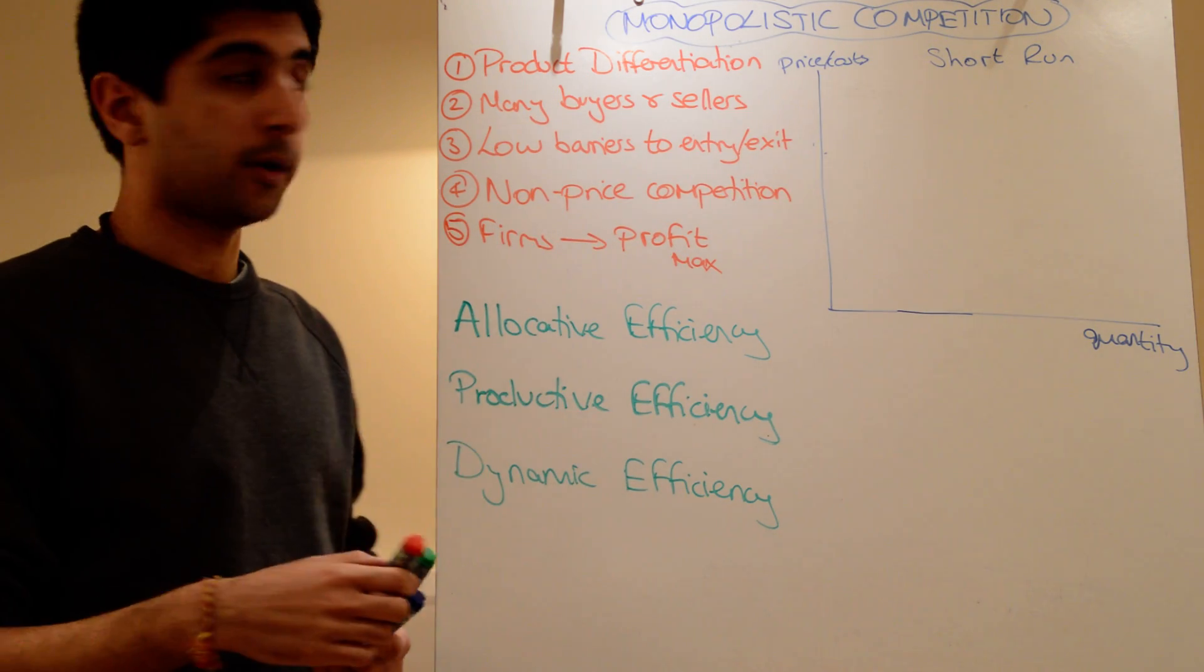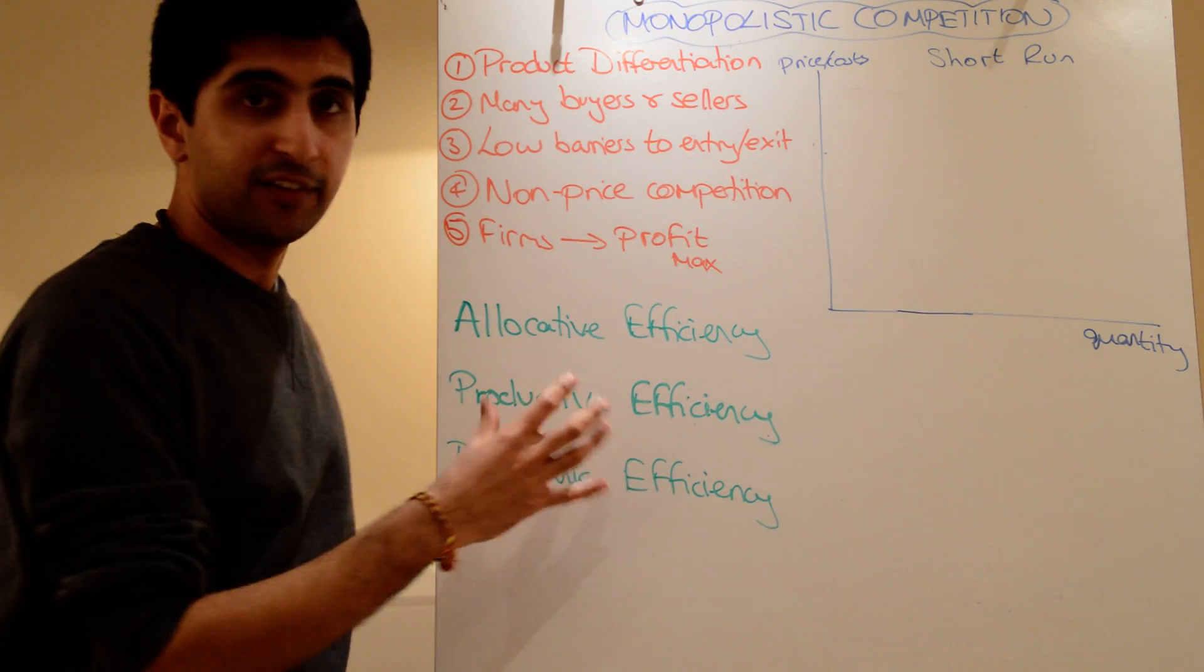And again, we assume firms do profit maximizers, so the same way: characteristics, conduct and then efficiency.